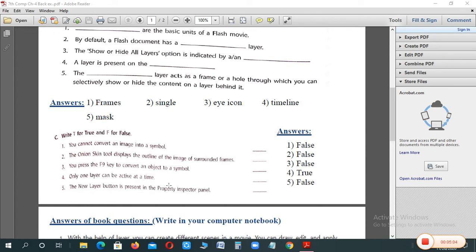The new layer button is present in the property inspector panel. That is false. When the layers come, it's in your timeline. Where there are layers, there is a symbol on the top where you can insert the new layer. So it doesn't happen in the properties. That is false.